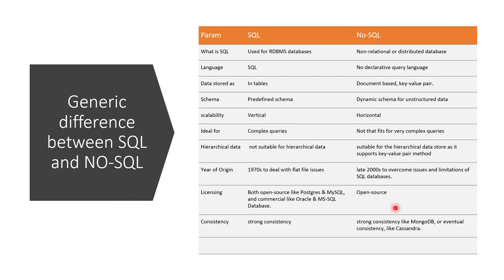SQL or relational databases offer strong consistency, which is why they are strong market players. Non-relational databases don't always require that level of consistency. For eventual consistency, Cassandra is available, and if you want a middle ground of consistency, MongoDB is available.